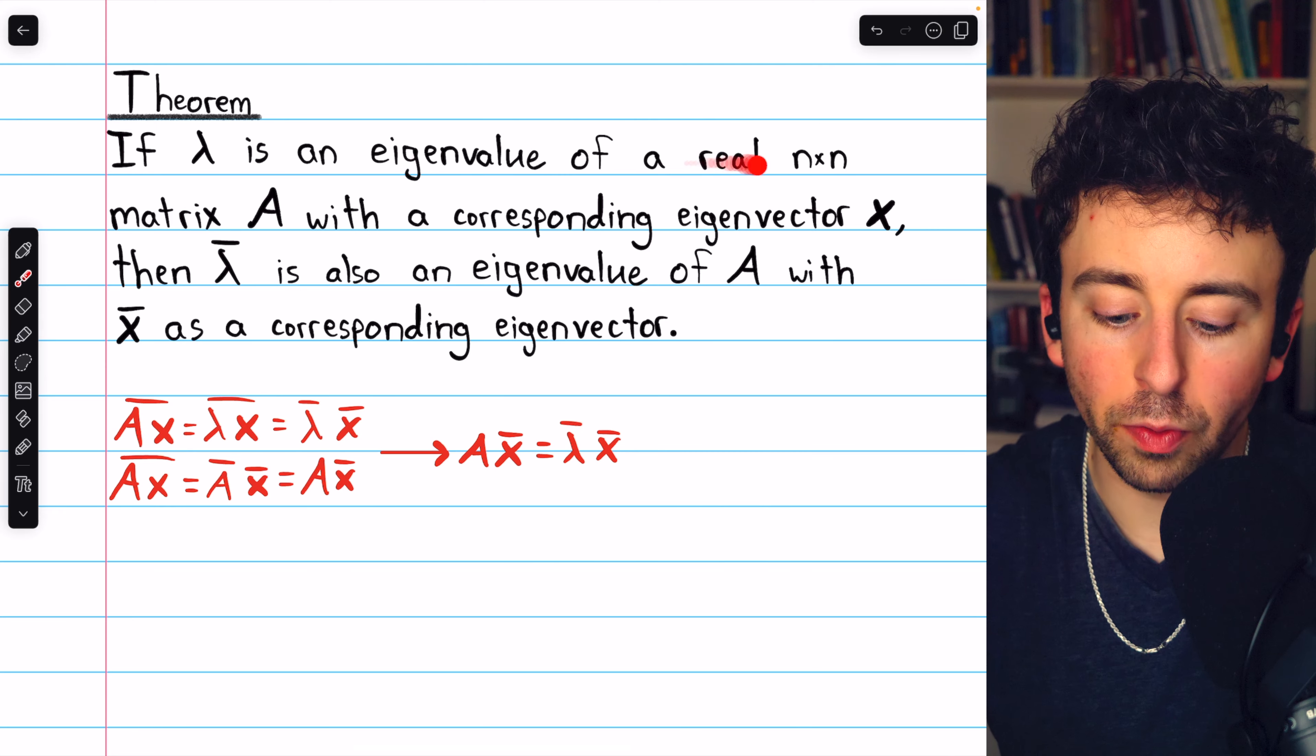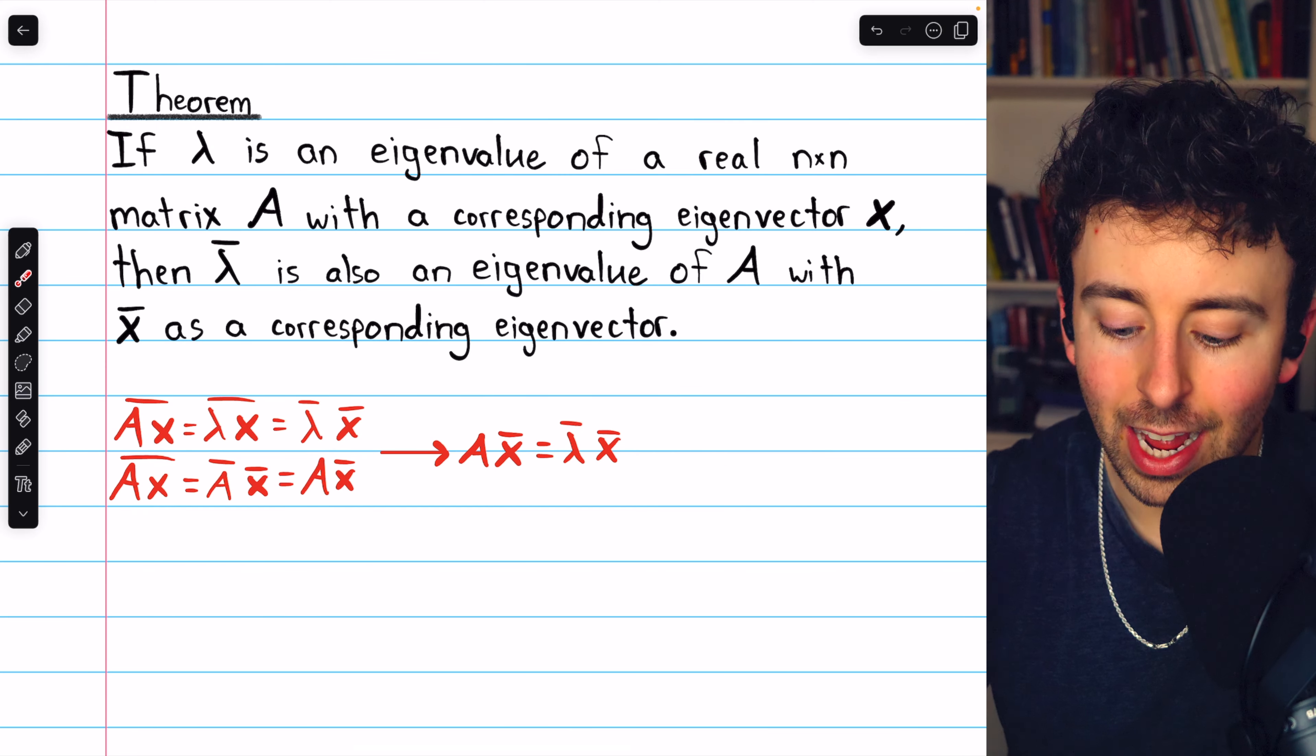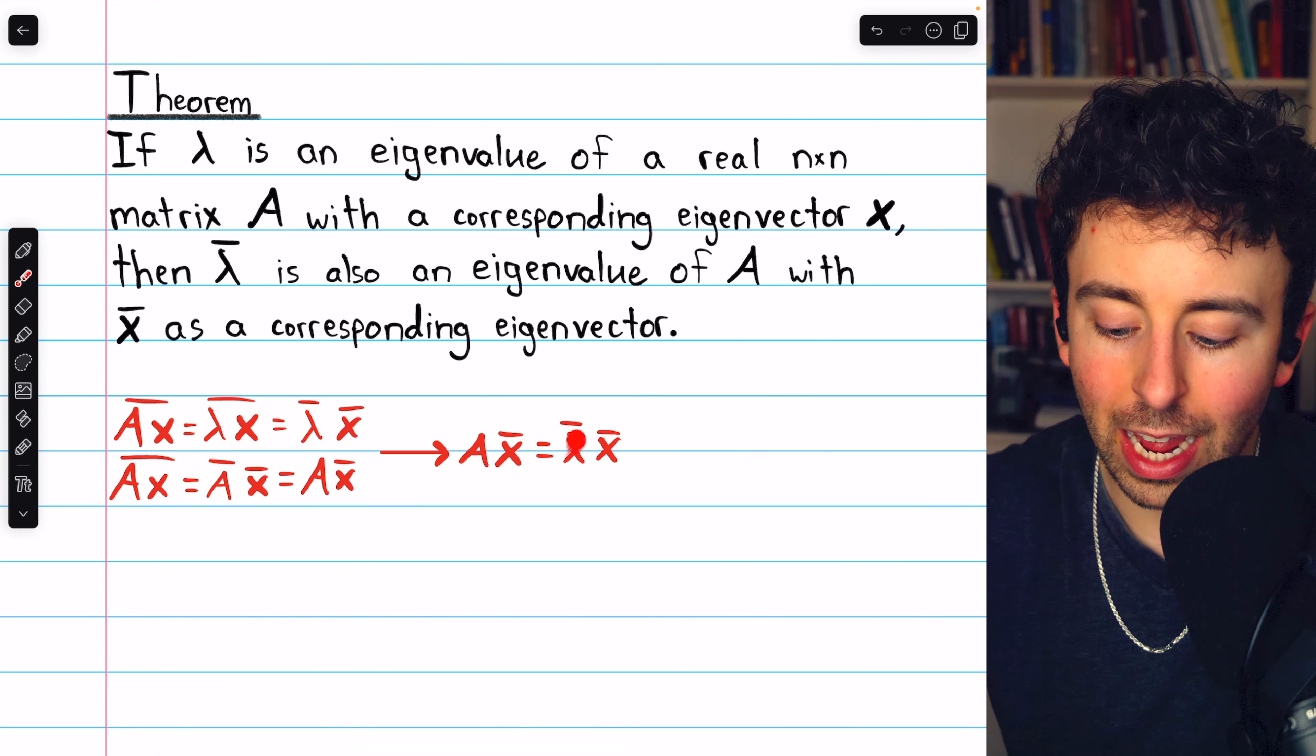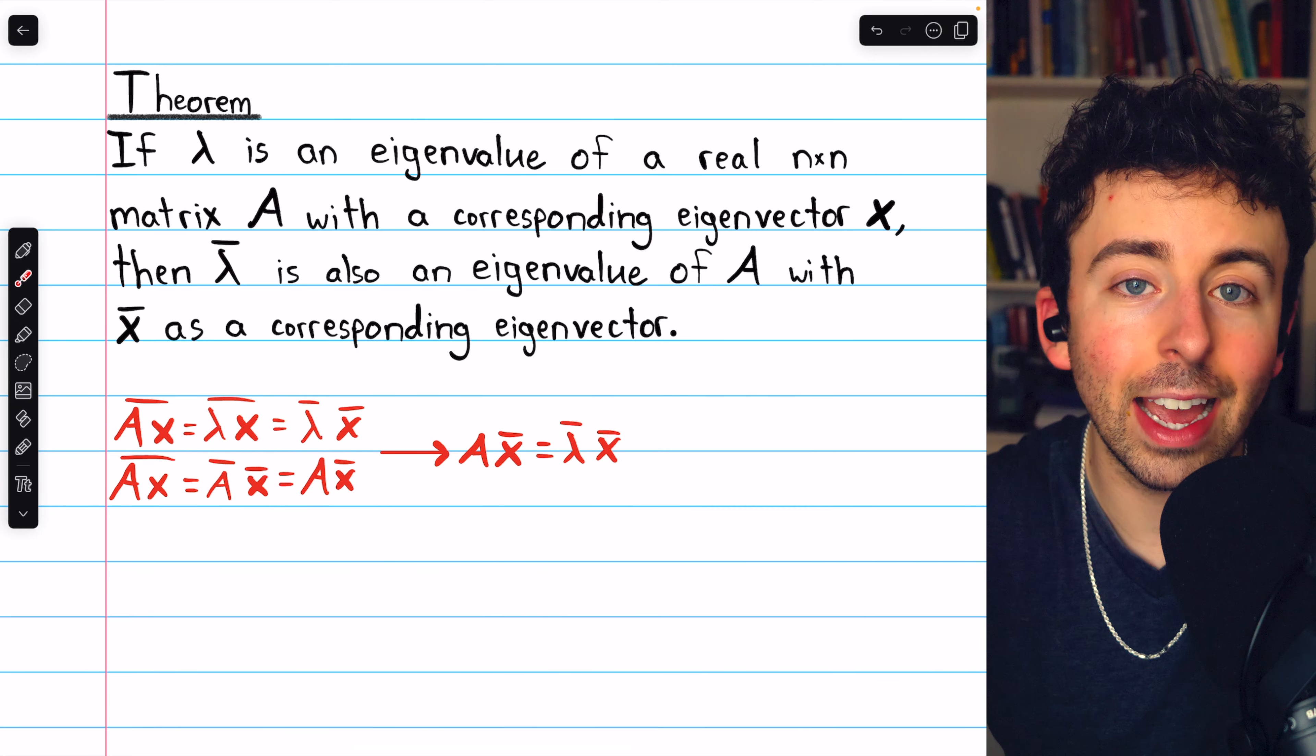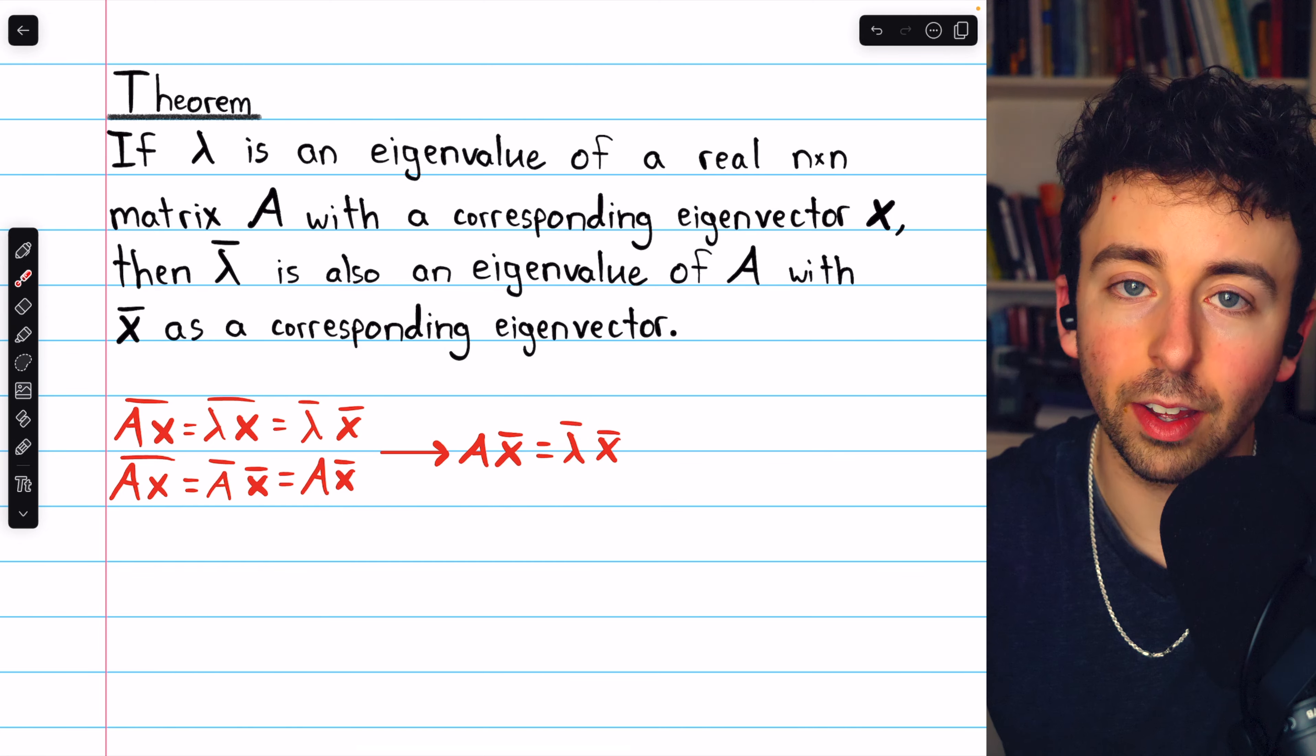So, if lambda is an eigenvalue of a real matrix A with a corresponding eigenvector X, then A times the conjugate of X is the conjugate of lambda times the conjugate of X. And so, by definition, the conjugate of X is an eigenvector of A corresponding to the eigenvalue conjugate of lambda.